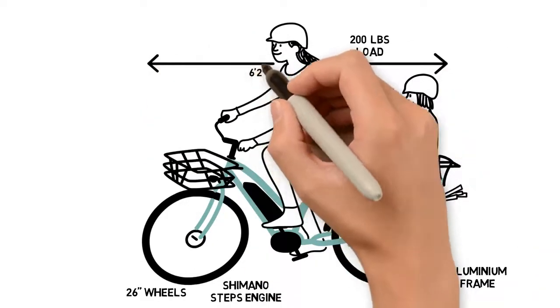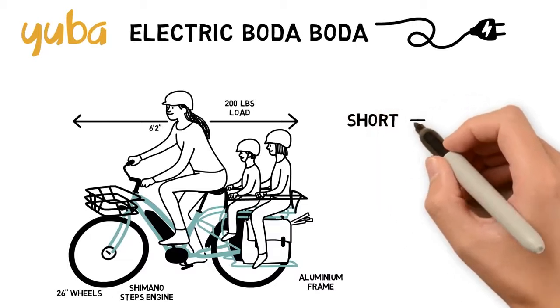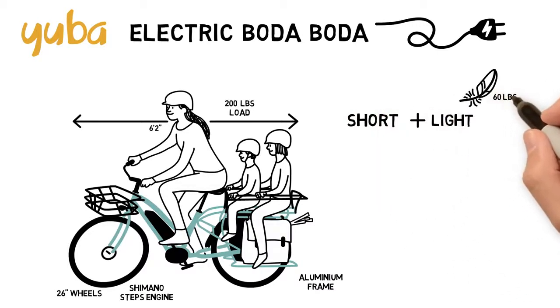The bike length is 6 feet 2 inches, which is actually pretty short for a cargo bike. It's also light, weighing only 60 pounds. It's only 2 inches longer and 11 pounds heavier than a regular electric bike.